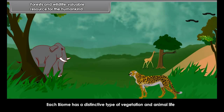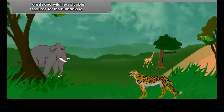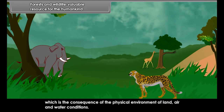Animals adapt themselves to a particular habitat. Different types of animals have different types of habitat — for example, camels largely like hot desert habitat while rhinoceros like swampy habitat. There is a close relationship between plants and animals in a particular ecosystem. The individual ecosystem is called a biome. Each biome has a distinctive type of vegetation and animal life, which is the consequence of the physical environment of land, air and water conditions.